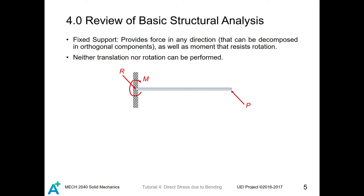For a fixed support, different from a pin, a pin only provides an arbitrary force which can be decomposed into orthogonal components. But apart from the arbitrary force, the fixed end also provides a moment which prevents the bar from rotation. For a pin, the bar will be able to rotate freely about it. But for the fixed end, the bar is completely fixed — no rotation is allowed, as well as no translation.